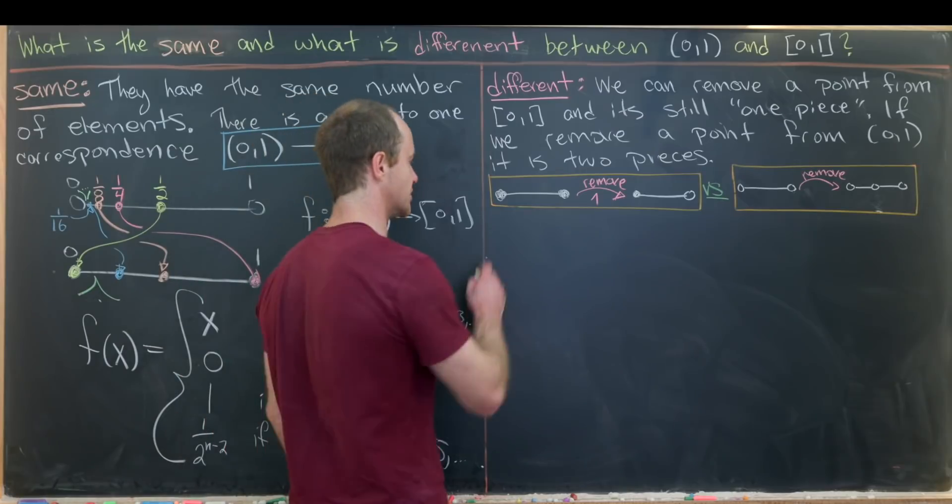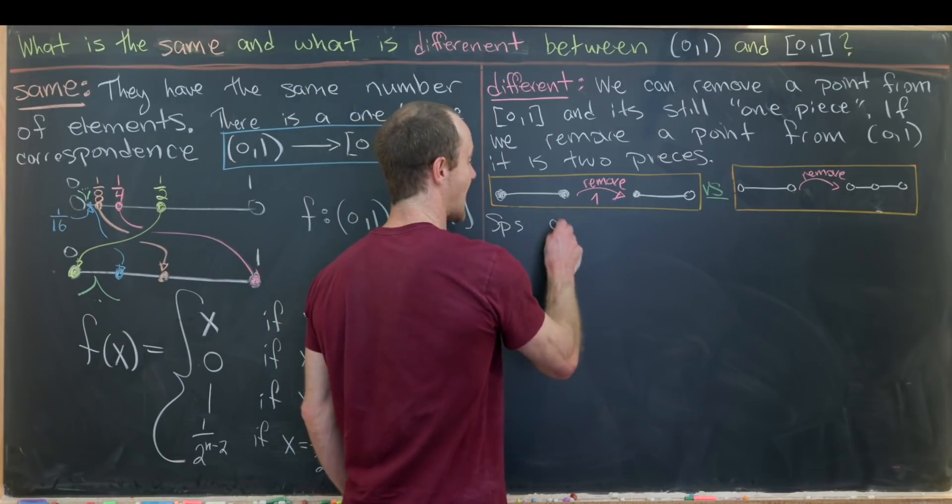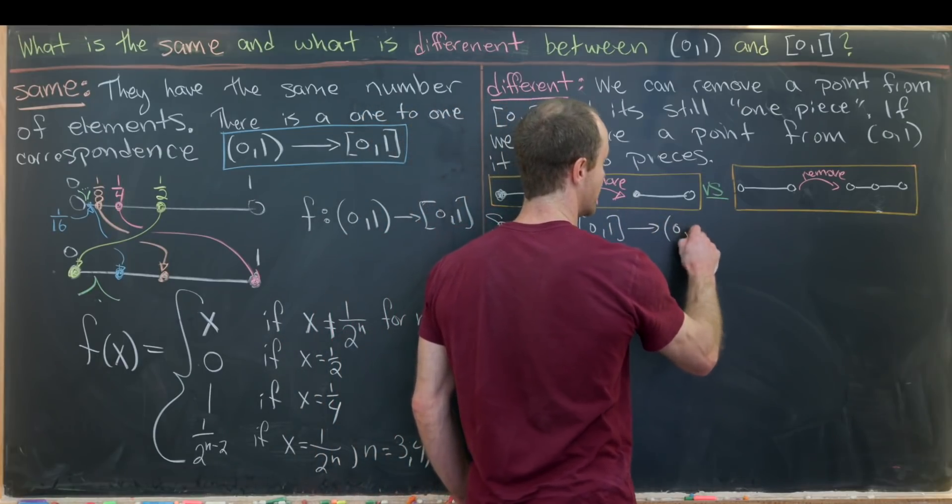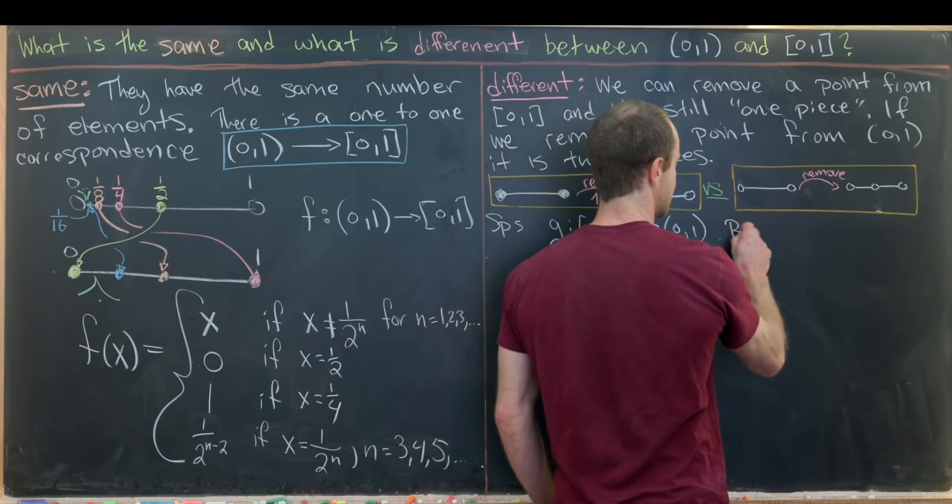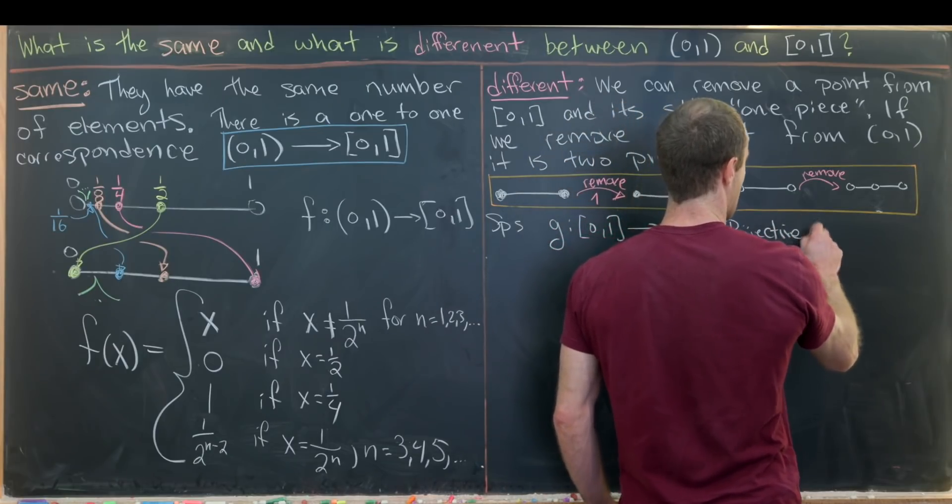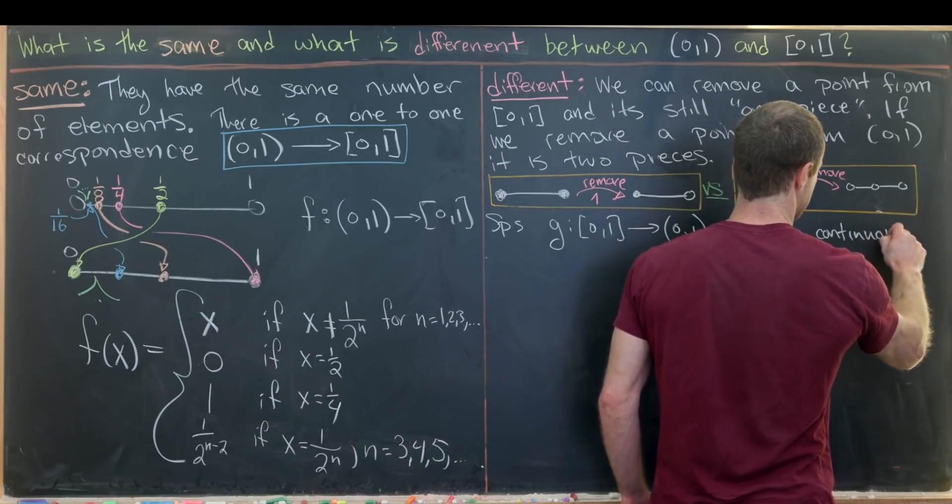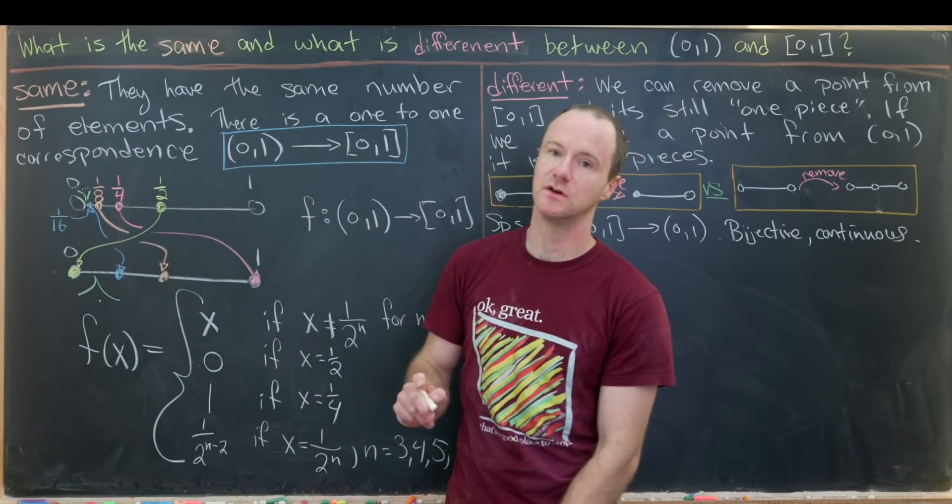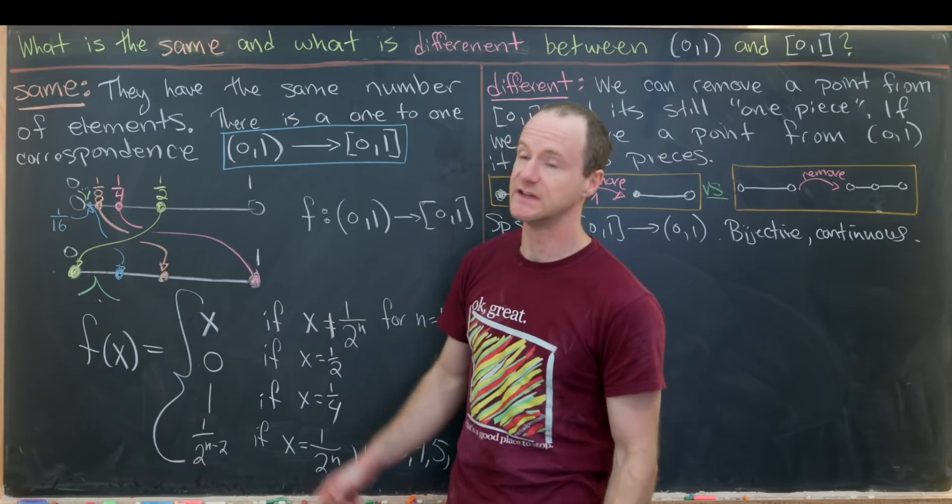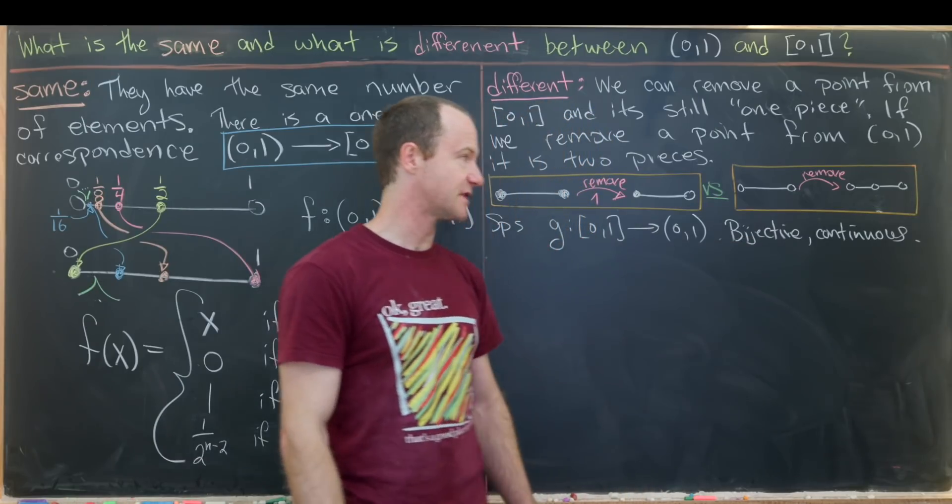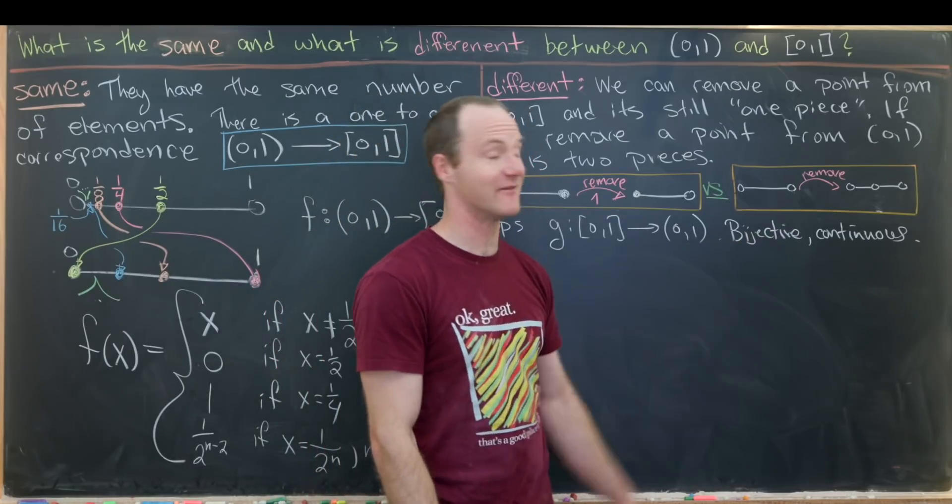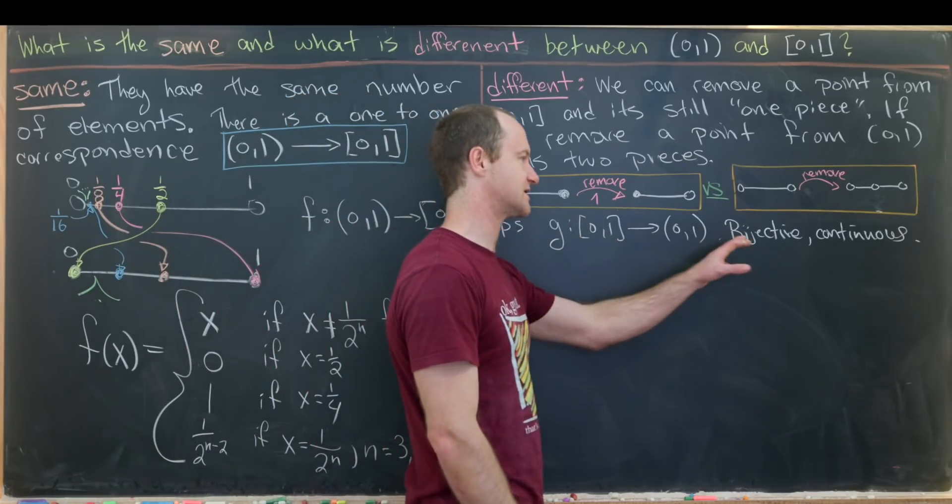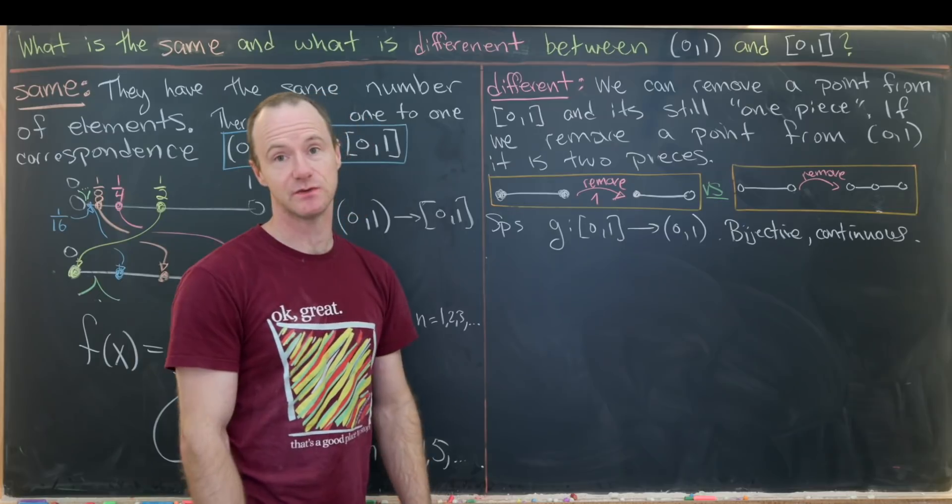So we'll do this by way of contradiction. So let's suppose we have a bijective function g from the closed interval to the open interval. So let's just say this is bijective and it's continuous. So check it out. Over here, we found a bijective function from the open interval to the closed interval. Well, that means its inverse is also a bijective function. So it's possible to have a bijective function. It's also possible to have a continuous function. I'll let you guys think about how you can find a continuous function. But what is not possible is to have a bijective and continuous function.